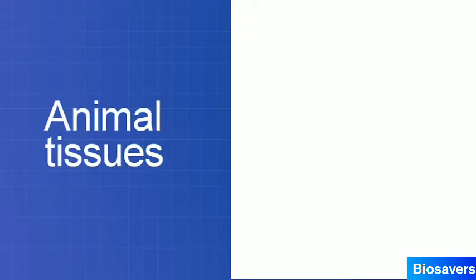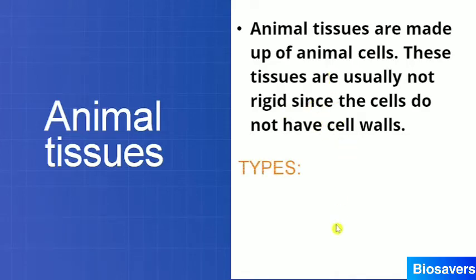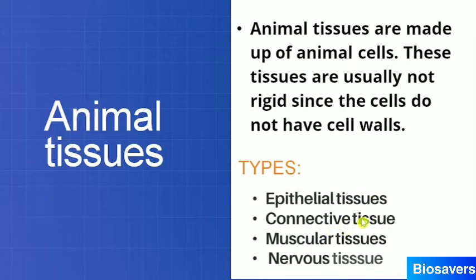Animal tissues are made up of animal cells. The basic difference between the animal cell and the plant cell is the presence or absence of cell wall. As the cell wall is absent in the animal cell, animal tissues are not rigid. They are basically of four main types: epithelial tissue, connective tissue, muscular tissue, and nervous tissue. Now let's talk about each of these tissues in detail.